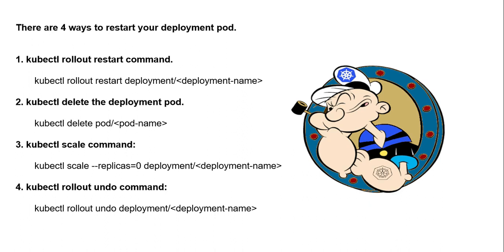The kubectl rollout undo command will undo the last rollout and recreate the pod with the previous configuration. Now we'll be moving to the terminal and I'll be executing these commands to show you how they work.